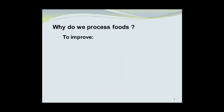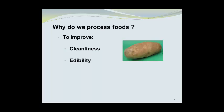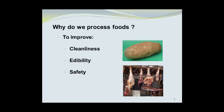Another reason we process foods is to improve such features as cleanliness. We'll move on to the next reason, and that's to improve edibility. Let's use a white potato as an example. When it is harvested, the starches in the white potato are not gelatinized and as such are not digestible by humans. By cooking or processing the potato, we can gelatinize the starch and make it readily digestible. A third example of an improvement is safety. Here we see food hanging in the open on a hot summer day. By processing the food and storing it properly, we can not only prolong its shelf life, but we can also enhance its safety.